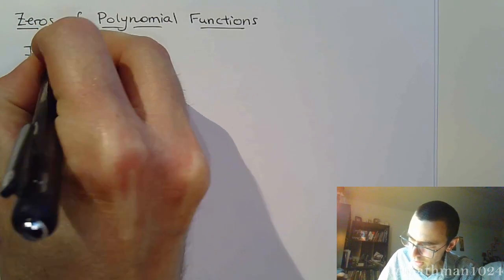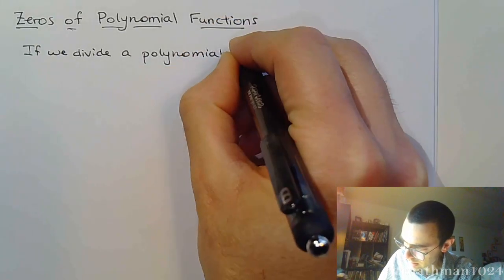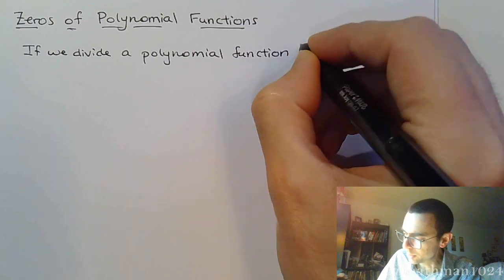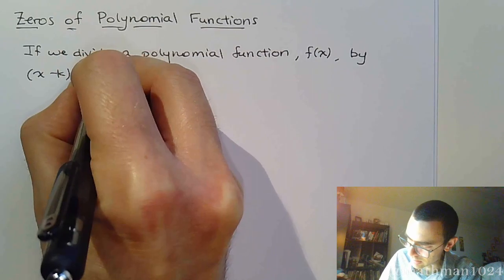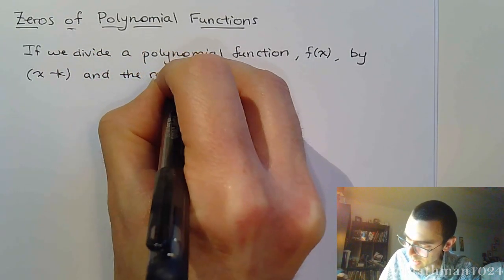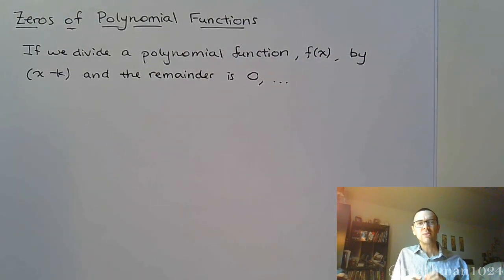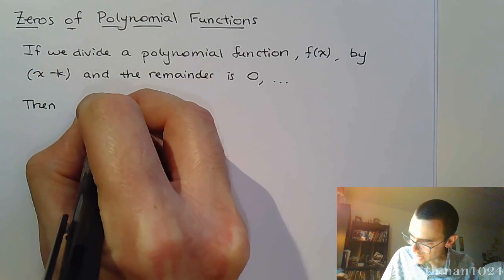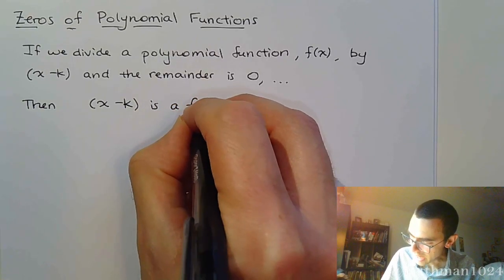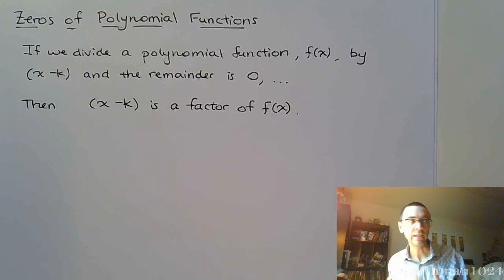If we divide a polynomial function f of x by x minus k, and the remainder is zero, then x minus k is a factor of the function. Remember, when something is a factor, that means it divides into it evenly, leaving us with a remainder of zero.